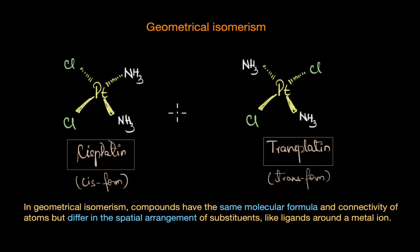Alright, by now we know what a cis isomer and a trans isomer looks like in a coordination compound. But here's the most important question: why are we learning all these things? Does this difference in the arrangement of ligands have any actual consequences? Absolutely.